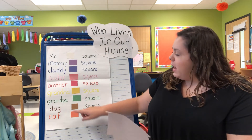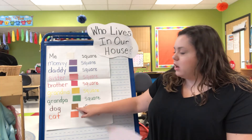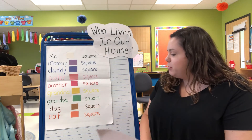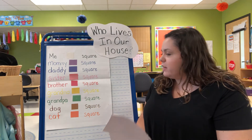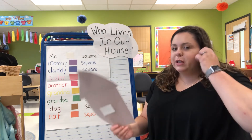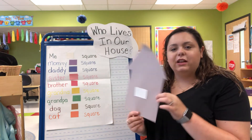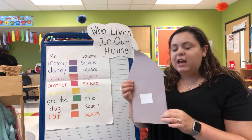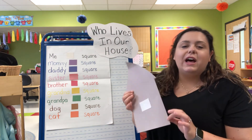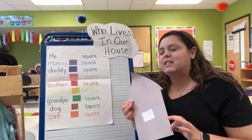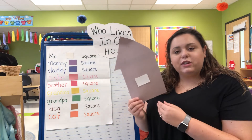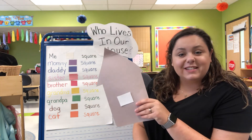If your grandpa lives in your house, you'll do a green square. If you have a dog or a cat, dogs will be brown squares and cats will be orange squares. Once you get it done, make sure you get a picture with you in your house, the people that live in your house, and send that picture to me and Miss Nicole.